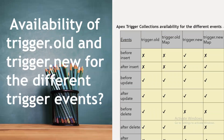Now let's look at the availability of trigger.old and trigger.new for different trigger events. For before insert: trigger.new is available; trigger.old is not. For after insert: trigger.new and trigger.newMap are available.